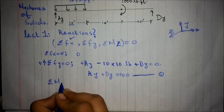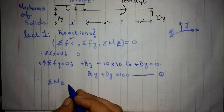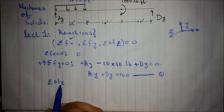Now, we use the third equation, sum of moment about z-direction. Now, we have to select a point for this equation.